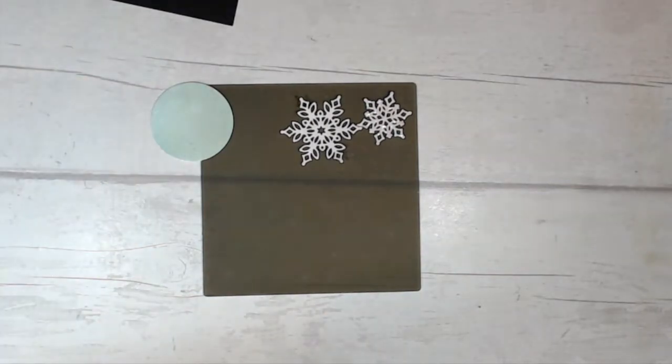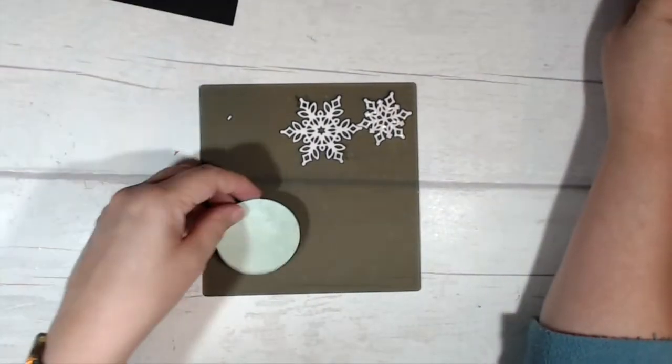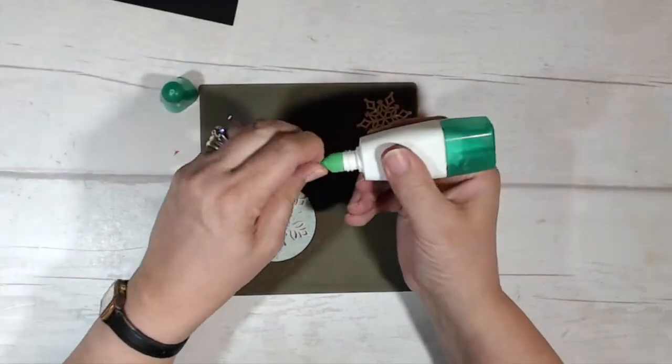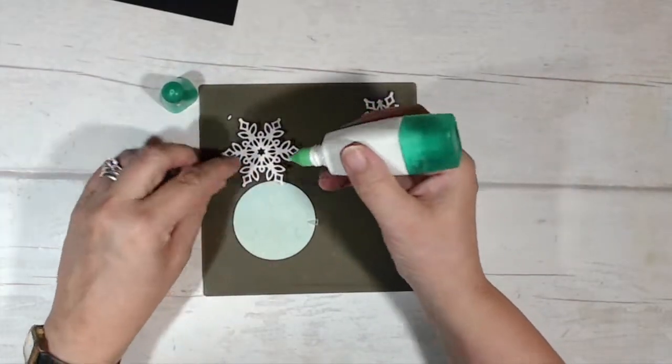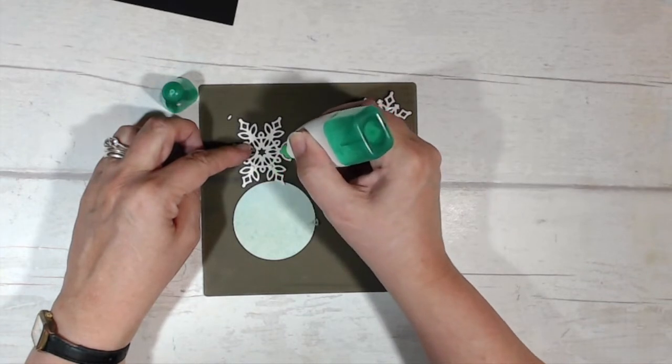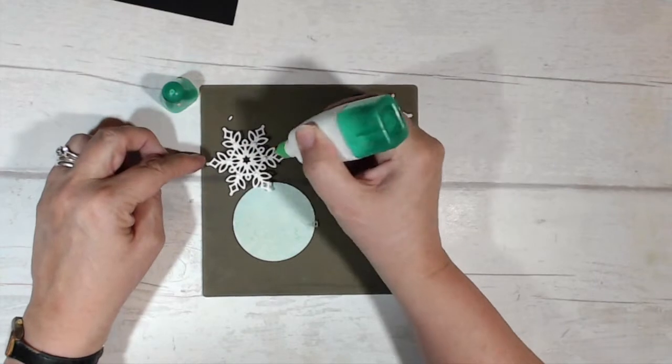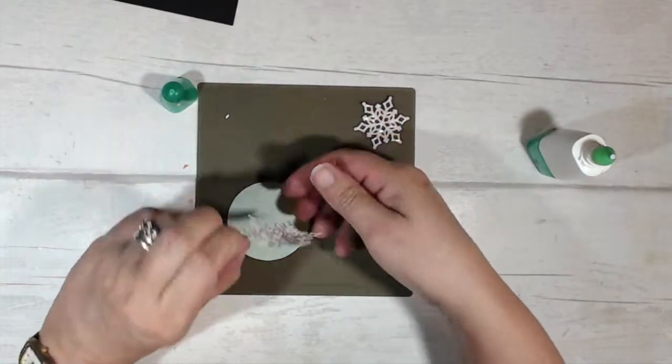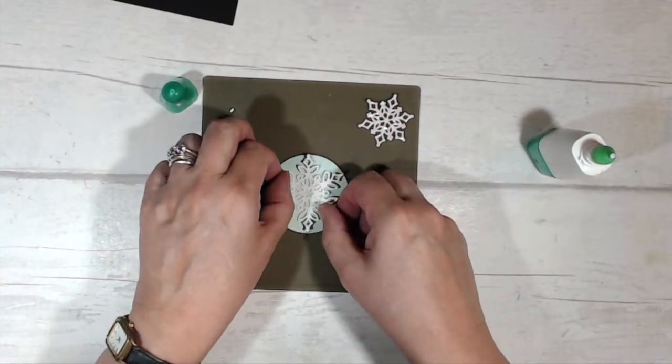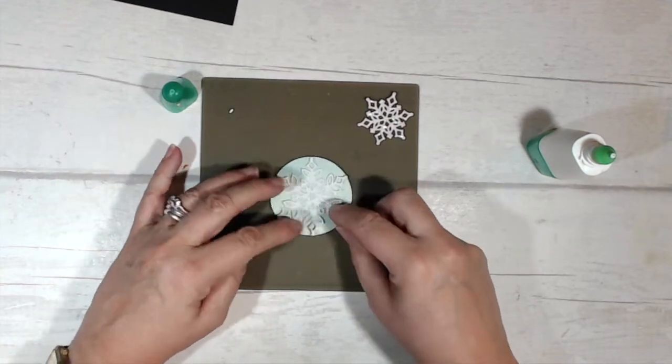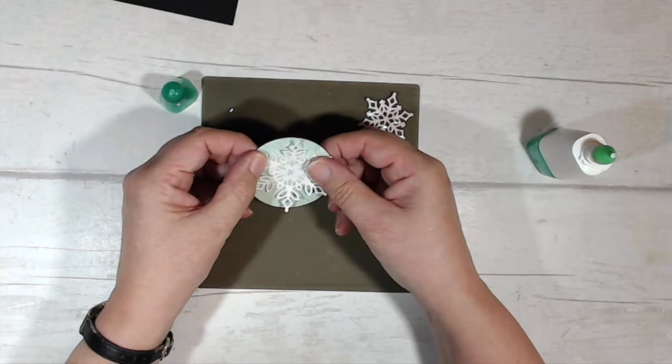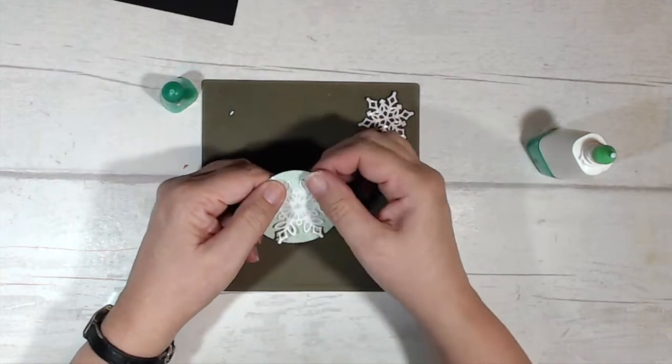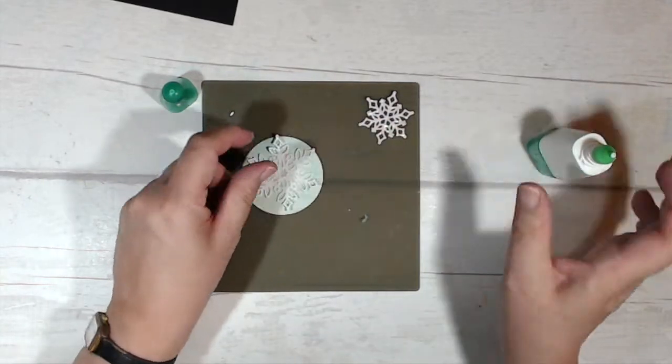So let's start building up my snowflake with a little bit of liquid adhesive. Just clearing the nozzle, and I'm just going to put tiny little spots at these points here and there and around the middle of the snowflake as well. That is going to go onto my circle just like that.